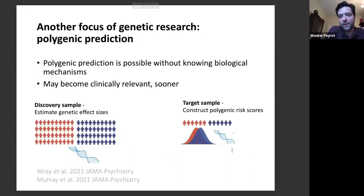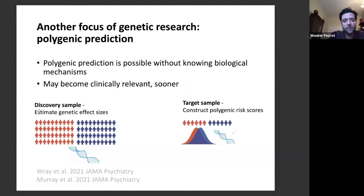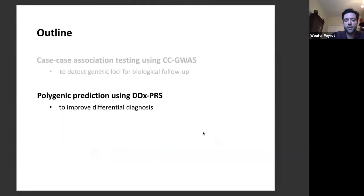At the same time, there is another focus in genetic research: polygenic prediction. Polygenic prediction can be done even without knowing the biological mechanisms underlying genetic effects, which is why it may become clinically relevant sooner than new drug development. How it works: in a discovery sample, you estimate the genetic effect sizes of approximately 1 million genetic variants, then construct polygenic risk scores in a fully independent target sample. These scores significantly predict case-control status in the target sample.